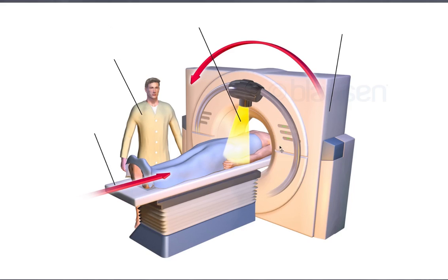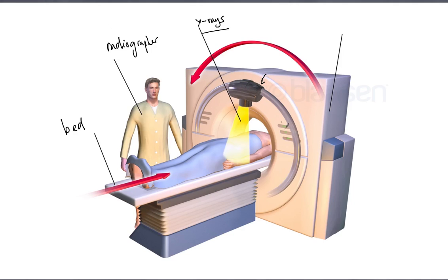Here is an image of a CAT scan machine, made up of a number of components. First, we have the bed — you slide into the machine as it takes a series of images around your axis. We have X-rays, which are crucial. Ultimately, a CAT scan is a glorified X-ray machine with some major differences. We have an X-ray source that spins around your body, a series of detectors on the other side that pick up the X-rays as they pass through your body, and the whole device is called the Gantry.